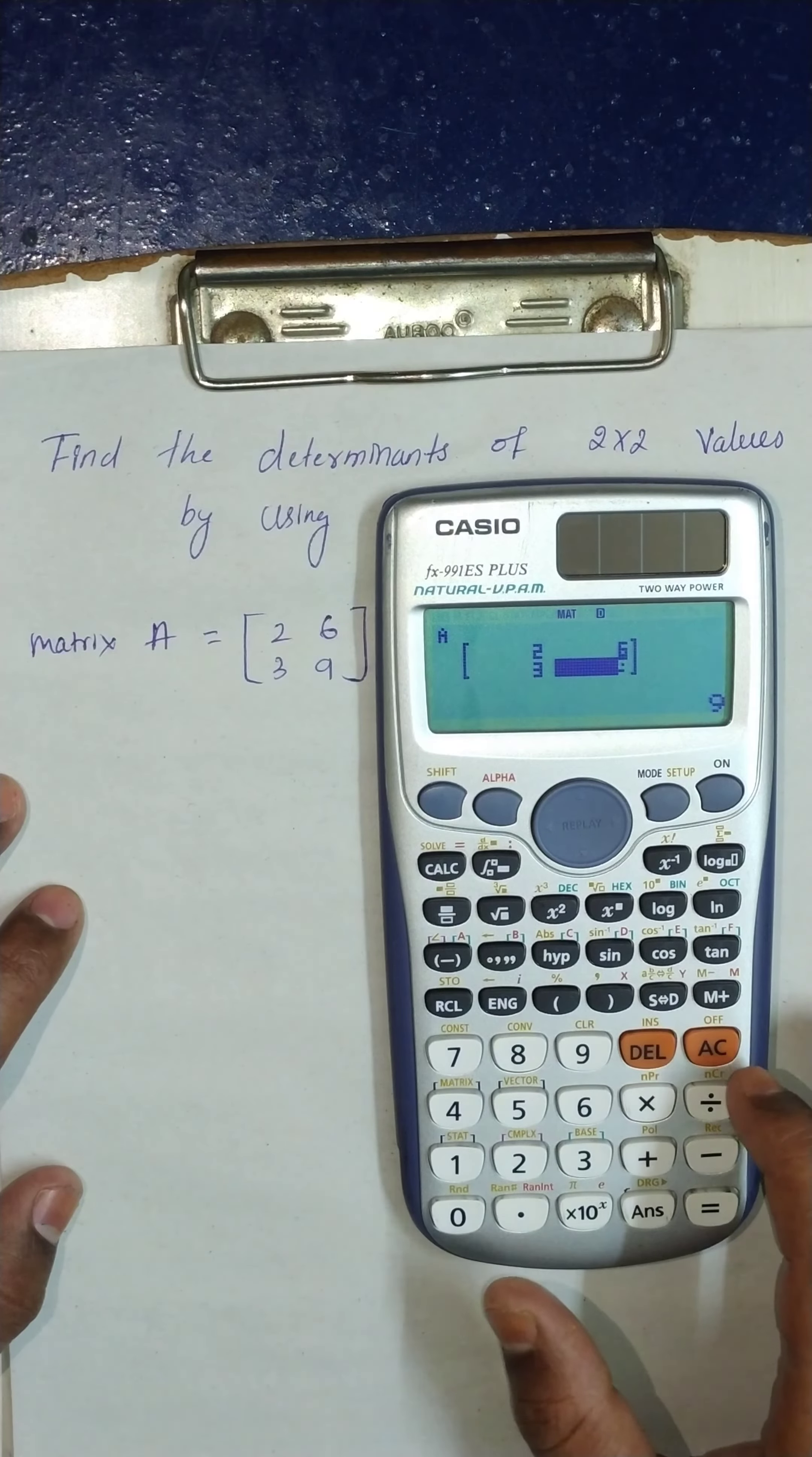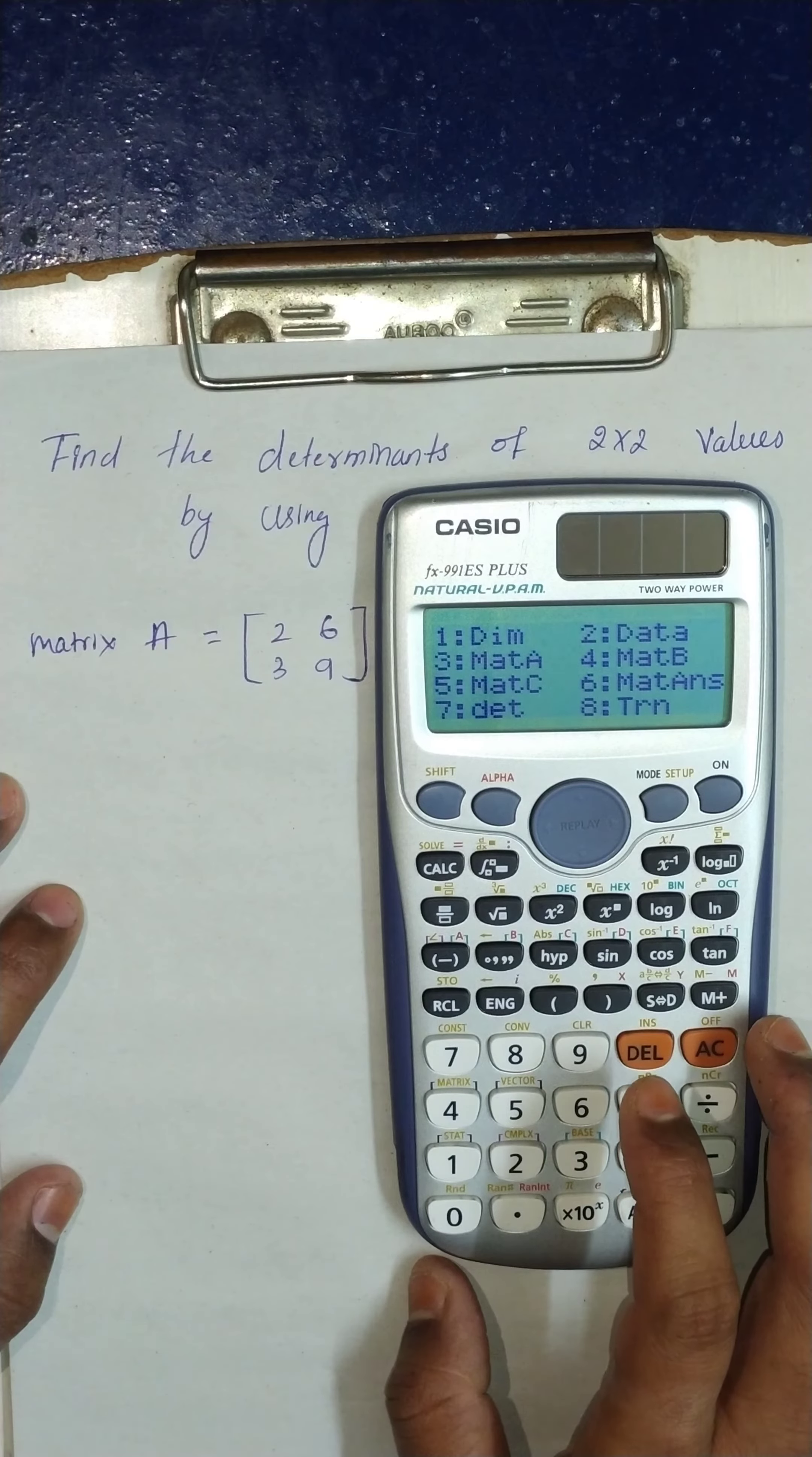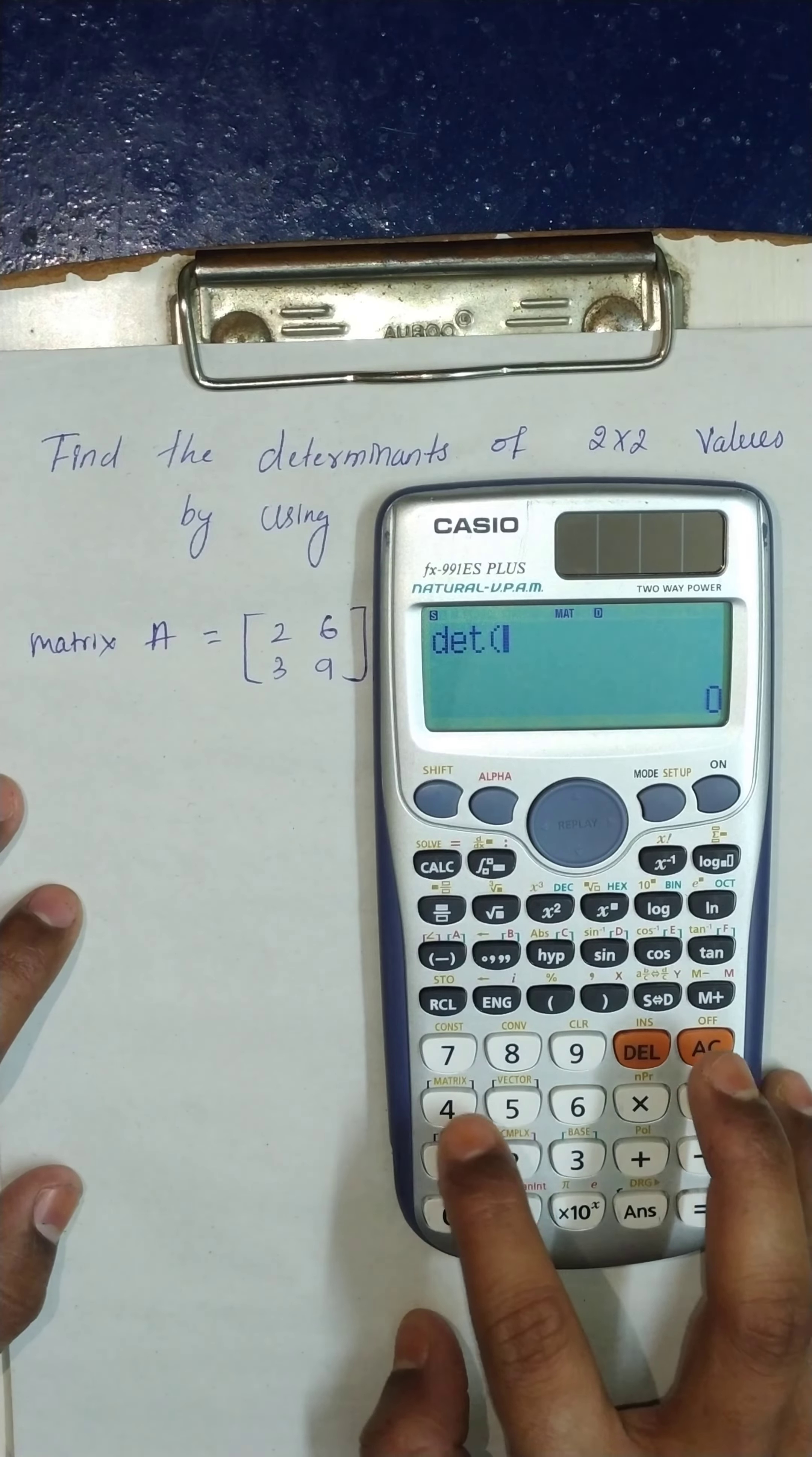After that, press AC. Then press shift, then press 4 to view the matrix. To get the determinant of a 2 by 2 matrix, press 7. Again, press shift and press 4.